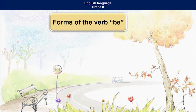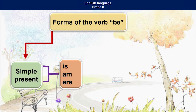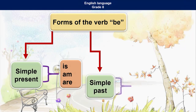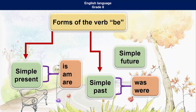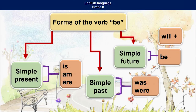Then we will move on to forms of the verb 'be'. In the simple present tense, the forms of verb 'be' are: is, am and are. In simple past tense we have was and were. In simple future tense we have 'be' with 'will'. In simple present tense, 'is' is used with singular and 'are' with plural. In simple future tense, with both singular and plural we use 'be' with 'will' — will and be go together.